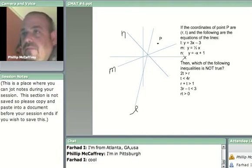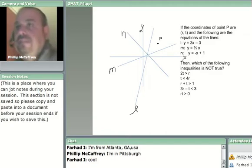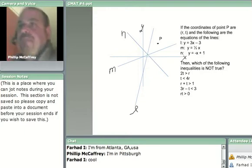The question states: if the coordinates of point P are (r, t) in the xy plane—that's why I forgot to include x and y, I'm playing with my new pen mouse—and the following are the equations of three lines: l is y = 3x - 3, m is y = (1/2)x, and n is y = -x + 1. Then which of the following inequalities is NOT true?